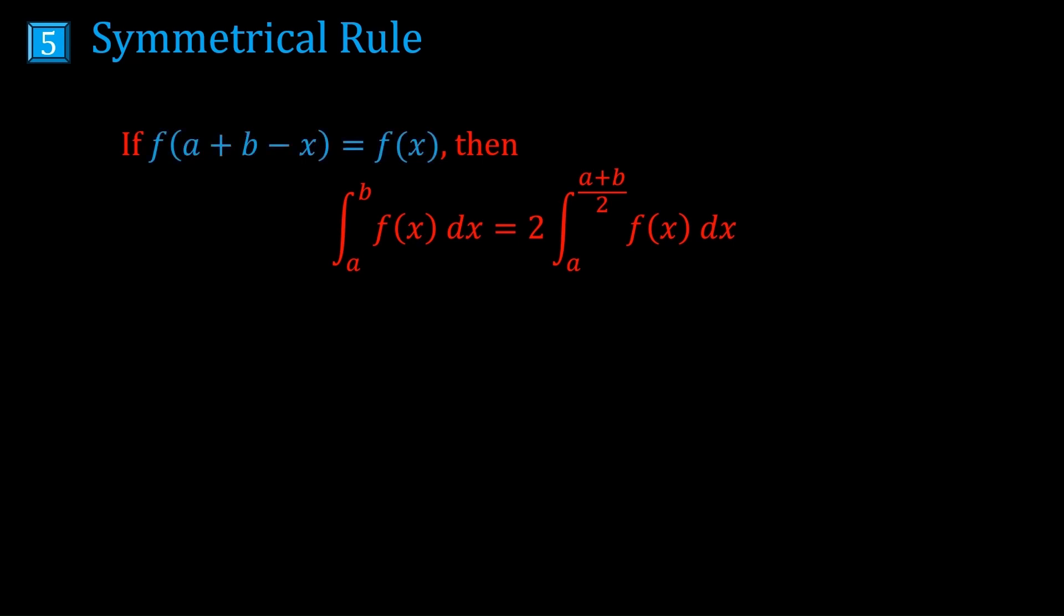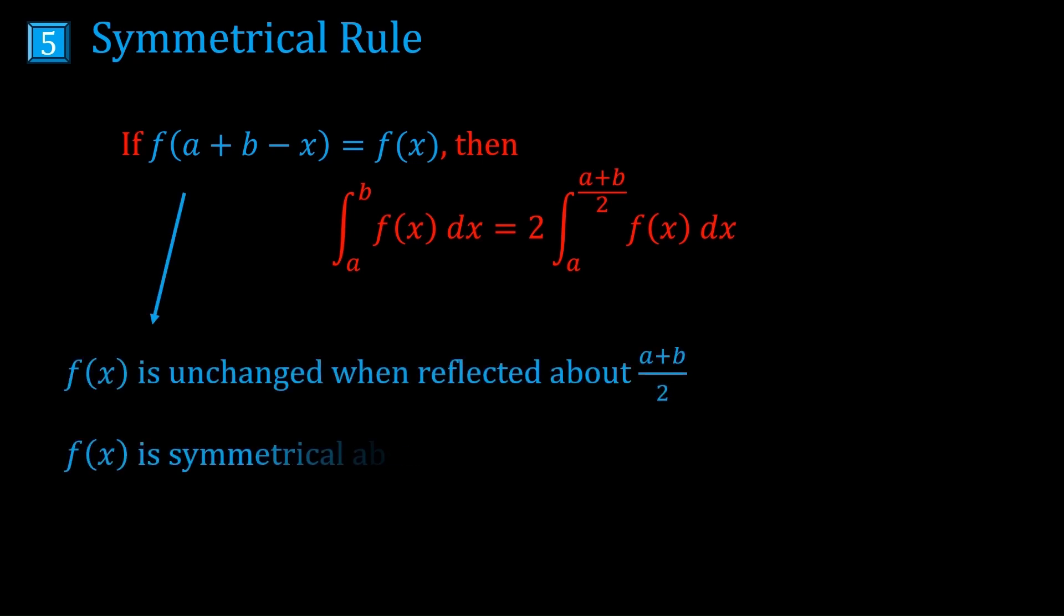When you reflect f(x) about the vertical line (a + b)/2, you get f(a + b - x). But if that graph is also equal to f(x), then the reflection didn't do anything. In other words, the graph is unchanged when you reflect it. So f(x) is actually symmetrical about (a + b)/2.